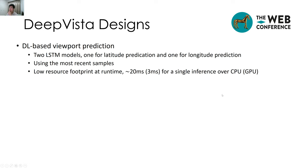There are additional designs such as a deep-learning-based viewport prediction with two LSTM models — one for latitude prediction and another for longitude prediction. We use the most recent samples for prediction, and these models have a low resource footprint at runtime. For a single inference, it takes 20ms on CPU and 3ms on GPU.